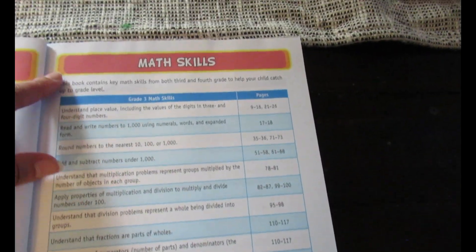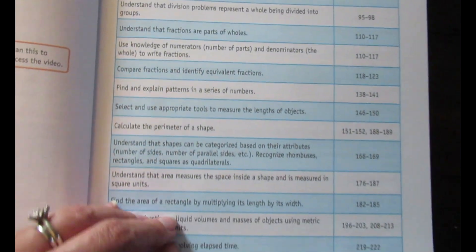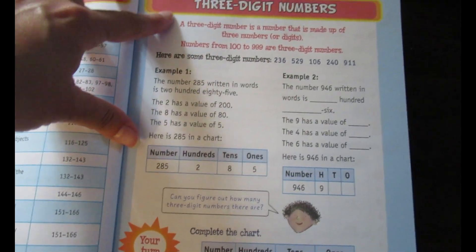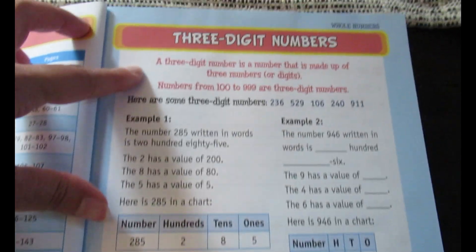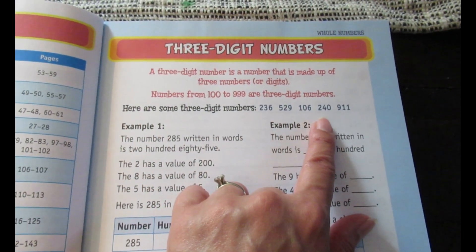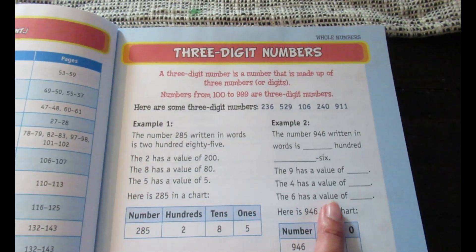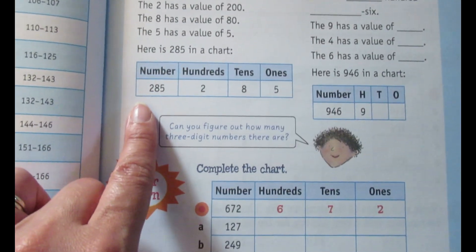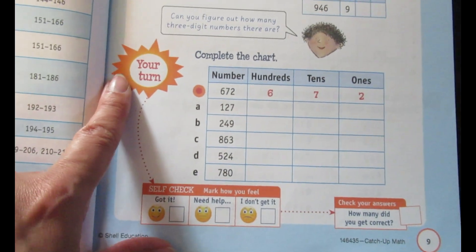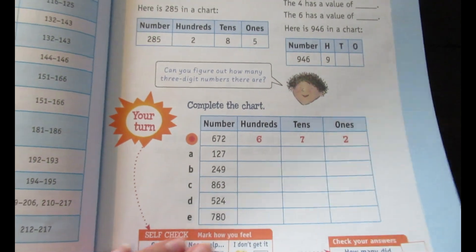Here it explains how to use the QR codes, which is what drew me to this particular resource. Here we have all the math skills that will be covered, just outlined for you. Here is three-digit numbers. It gives you some examples—sample one, example two—and then a 'your turn' section where you would figure out the chart.